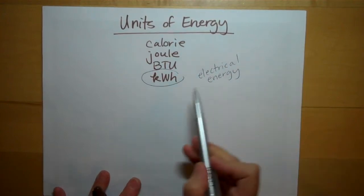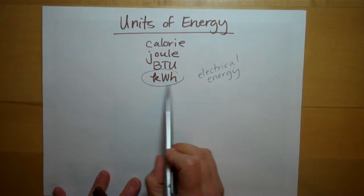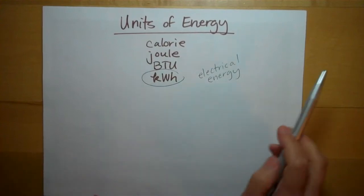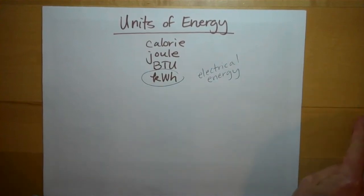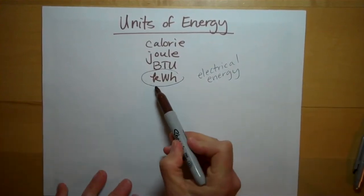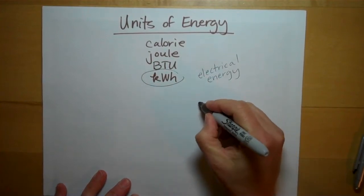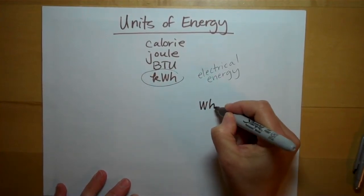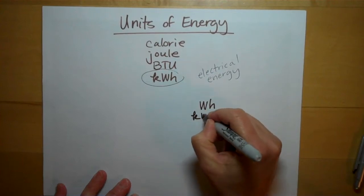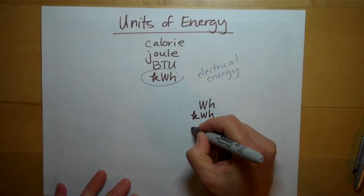It's also a pretty confusing unit. So I want to talk about each part of it here. First of all, you notice this is a prefix. So we could talk about a smaller unit, the watt hour, or we could talk about the kilowatt hour.